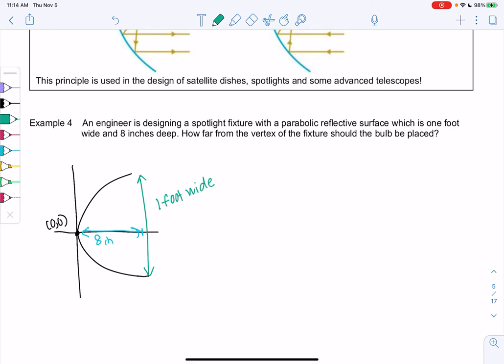How far from the vertex should we place the bulb? So we just learned that we want to place the bulb at the focus. And if it's at the focus, that means it's going to hit the parabola and then it'll reflect in this nice parallel motion.